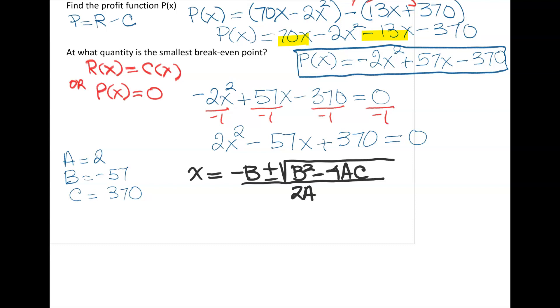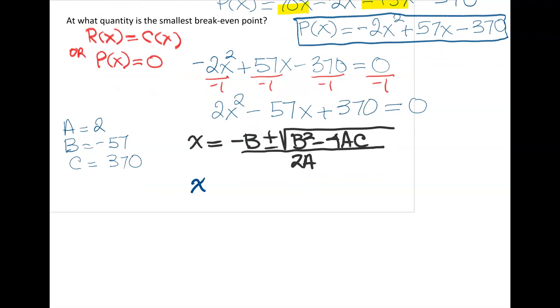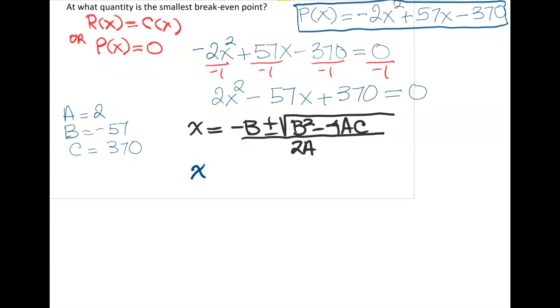I'm going to plug my numbers in, clean it up, and out should pop our break-even points. There's going to be two of them because it's a quadratic which has two solutions, but we're just going to give the smallest one. So x = -(-57) ± √((-57)² - 4(2)(370)) all divided by 2(2).